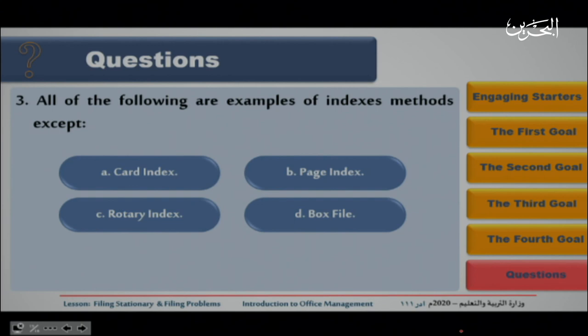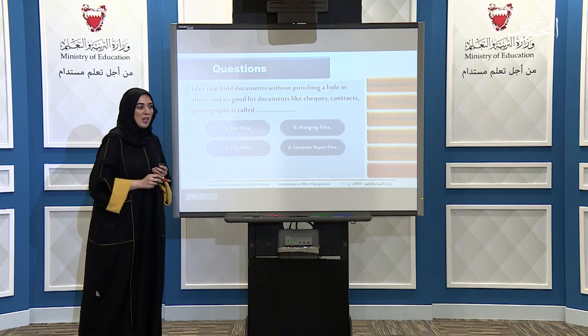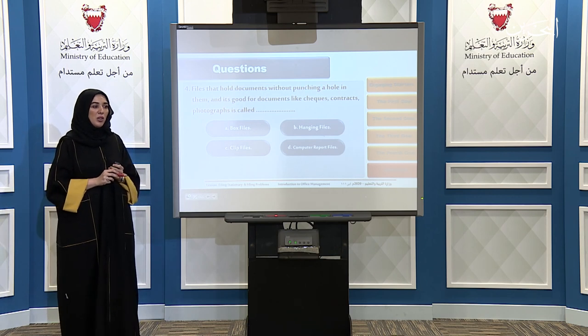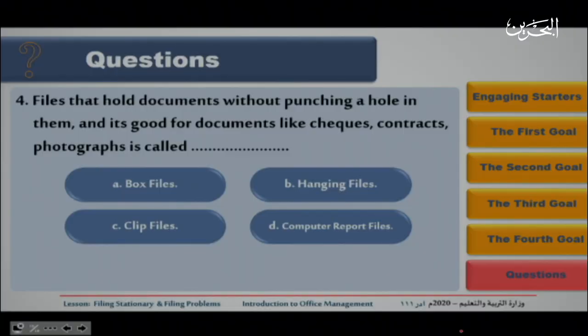Question three: all the following are examples of indexing methods except: A. Card Index, B. Page Index, C. Rotary Index, or D. Books File. The answer is D, Books File. Last question: files that hold documents without punching a hole in them, suitable for checks, contracts, and photographs, are called: A. Box Files, B. Hanging Files, C. Clip Files, or D. Computer Report Files. The answer is C, Clip File.